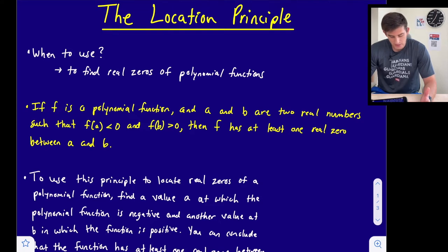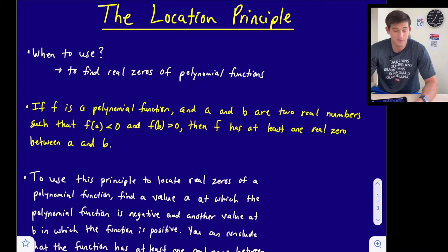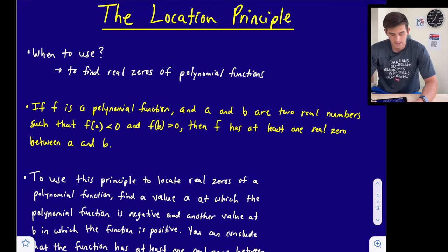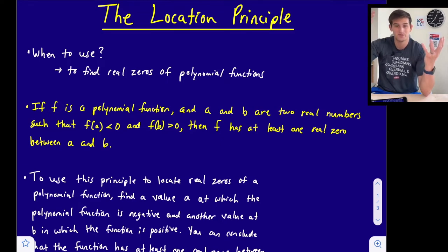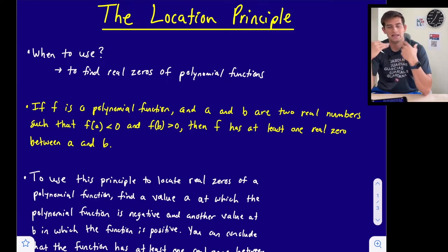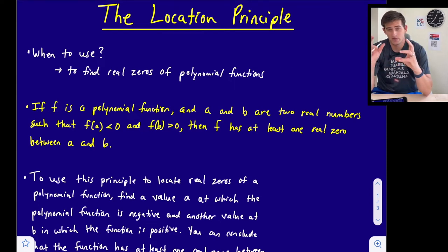So what does the location principle say? If f is a polynomial function and a and b are two real numbers such that f of a is less than zero and f of b is greater than zero, then f has at least one real zero between a and b. Essentially, we have a y value that's negative, a y value that's positive, and so a y value of zero must lie between them. That's when we find our real zeros — when our function is set equal to y and we figure out what x is.